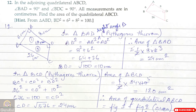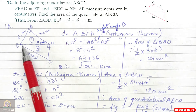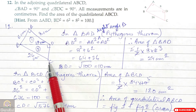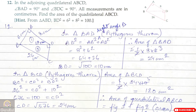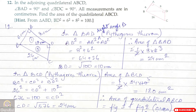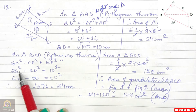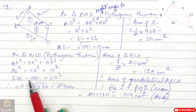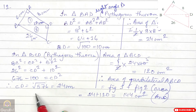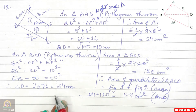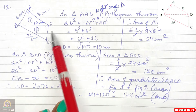Now for triangle 2, which is triangle BCD — again a right angle triangle because angle D is 90 degrees. Here BC is the longest side (hypotenuse = 26 cm) and the base is missing. Using Pythagoras theorem: BC² = CD² + BD², so 26² = CD² + 10², giving 676 − 100 = CD². Therefore CD = √576 = 24 cm.